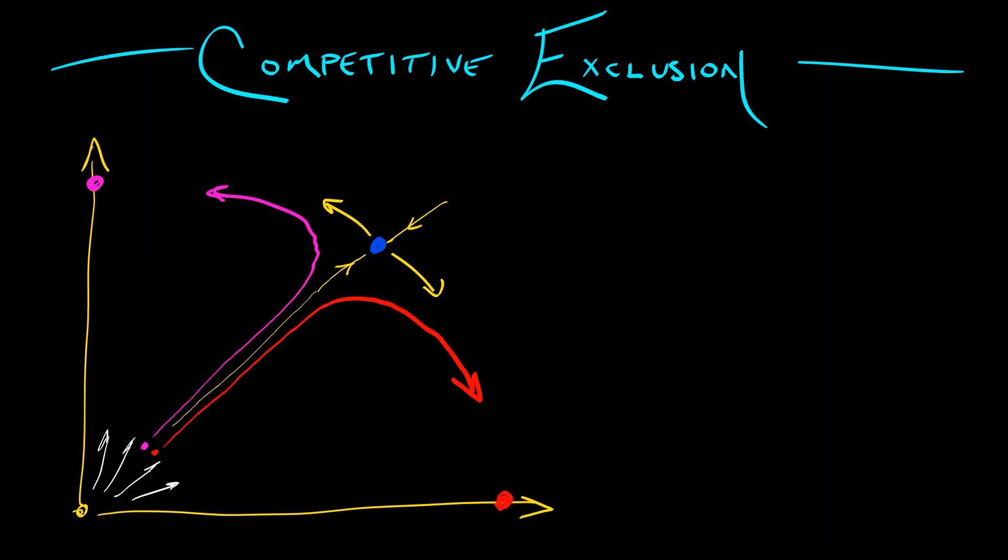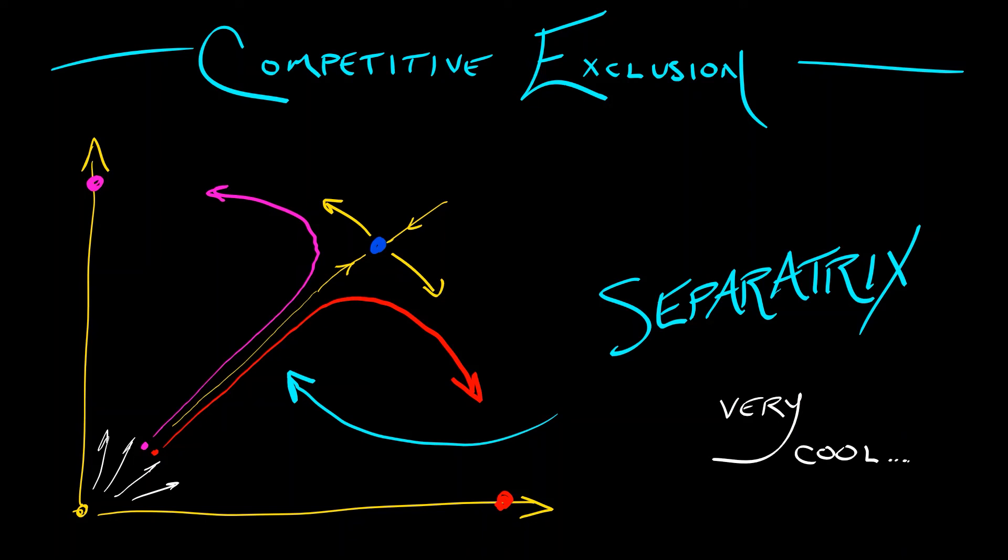Now, this curve that follows in along the direction of the stable vector, this is something called a separatrix, and it is very cool. You'll be seeing those again later in dynamical systems.